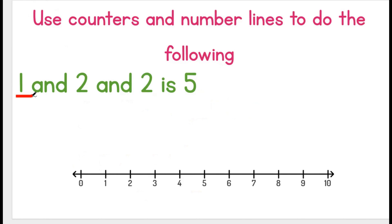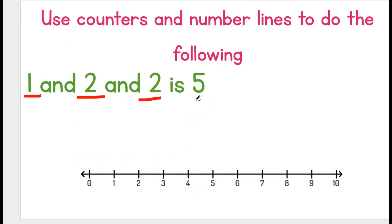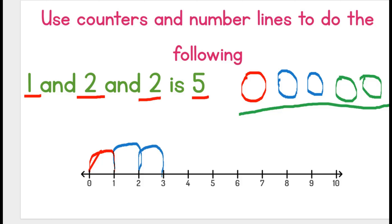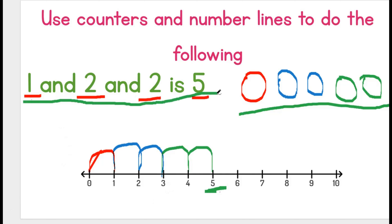Now, one and two and two is five. Let's draw this: one, one, two, then one, two. We now have five. Let's draw this on the number line: one, one, two, three, then one, two. And our answer is five. This means that one and two and two is five.